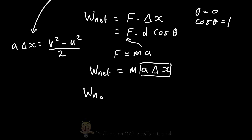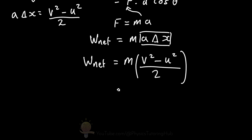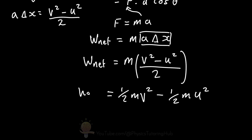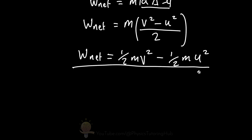Substituting this into our work equation, the net work done by a force on an object equals the object's mass multiplied by the final velocity squared minus the initial velocity squared, divided by two. Expanding the brackets gives us ½mv_f² minus ½mv_i², which is the work-kinetic energy theorem: the net work done on an object equals the change in its kinetic energy.